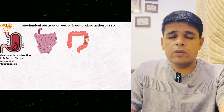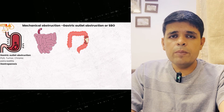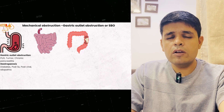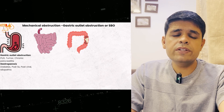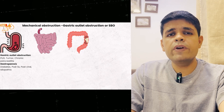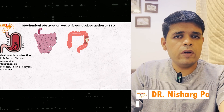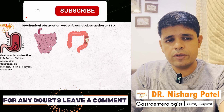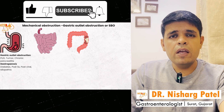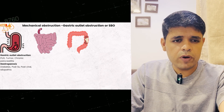Another cause is gastroparesis, where there is no mechanical obstruction at the D2 level, but the stomach is not functioning well. Common causes of gastroparesis include longstanding diabetes — usually seen after 10 to 15 years of uncontrolled diabetes — GI surgery causing vagus nerve injury, vagotomy, post-viral infections, and in 40 to 60% of cases it can be idiopathic with no cause found.